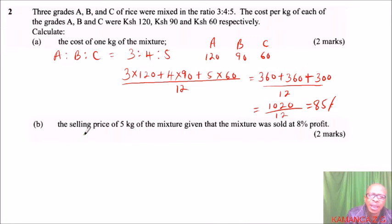The second part, part (b), we are told the selling price of 5 kg of the mixture given that the mixture was sold at 8% profit. We have seen the cost of 1 kg of the mixture was 85, so if it were to be sold at 8% profit, this would be 85 divided by 100, multiply by the new price which is 108, and multiply by 5.